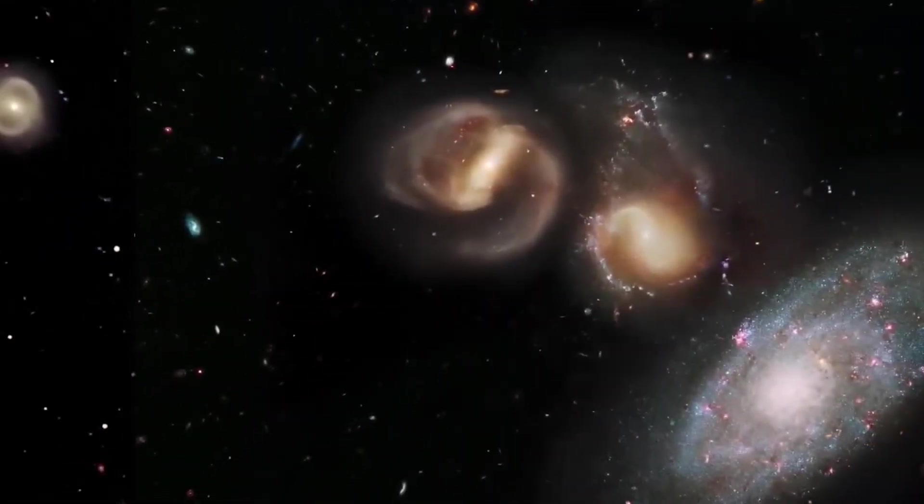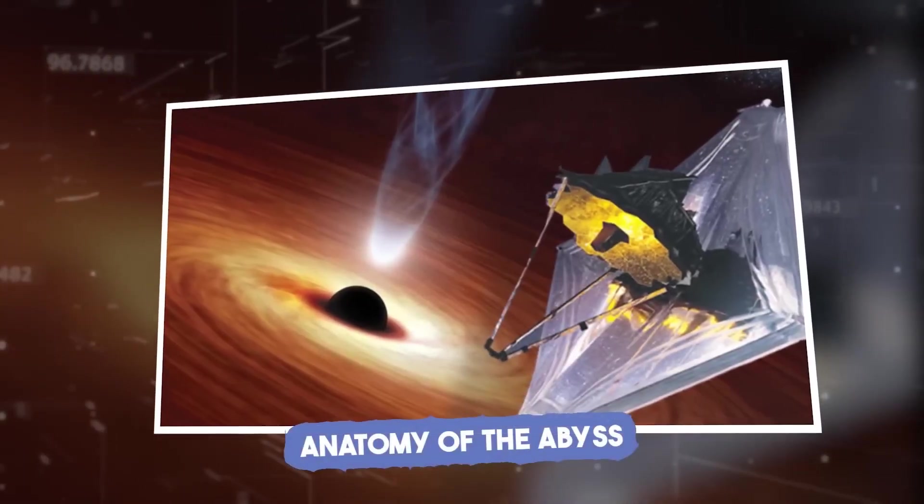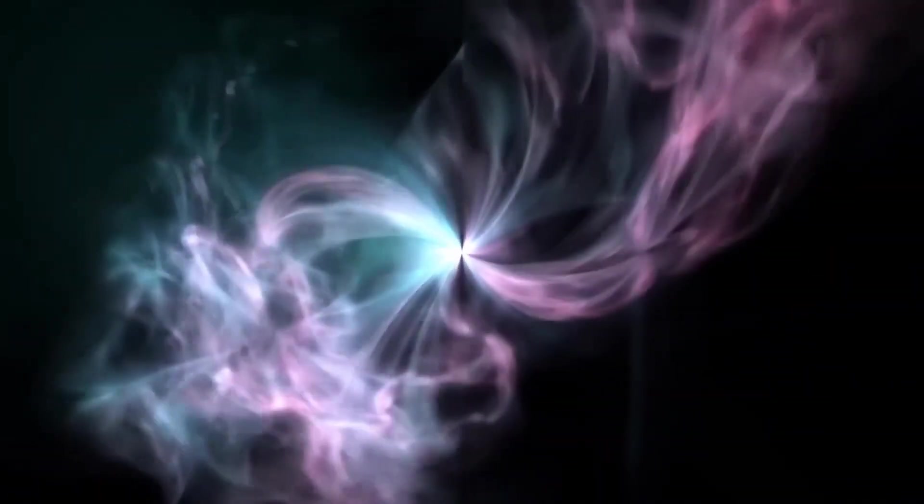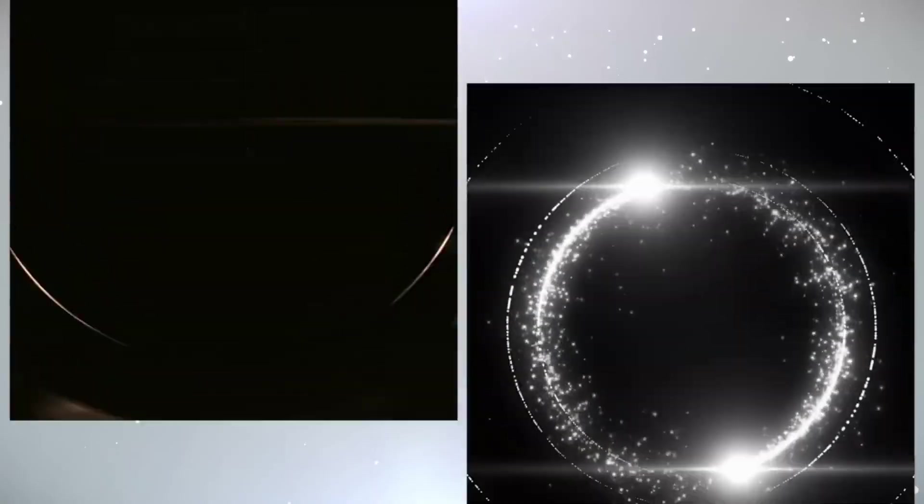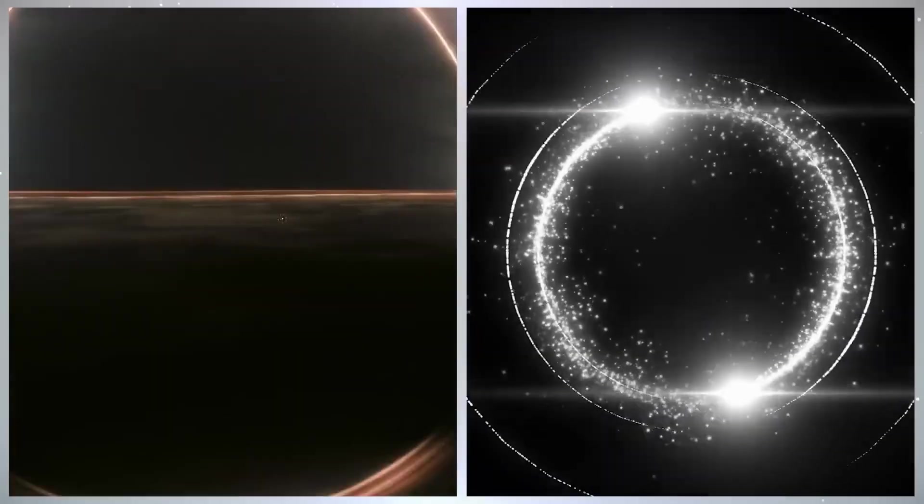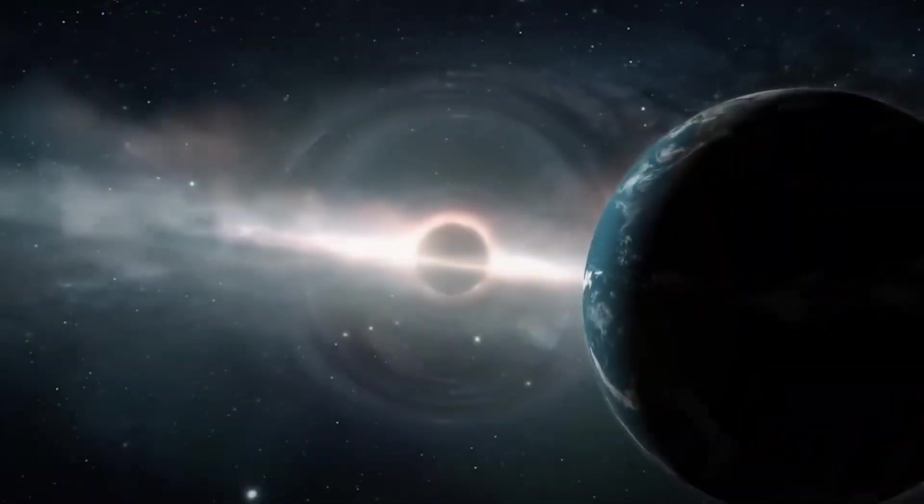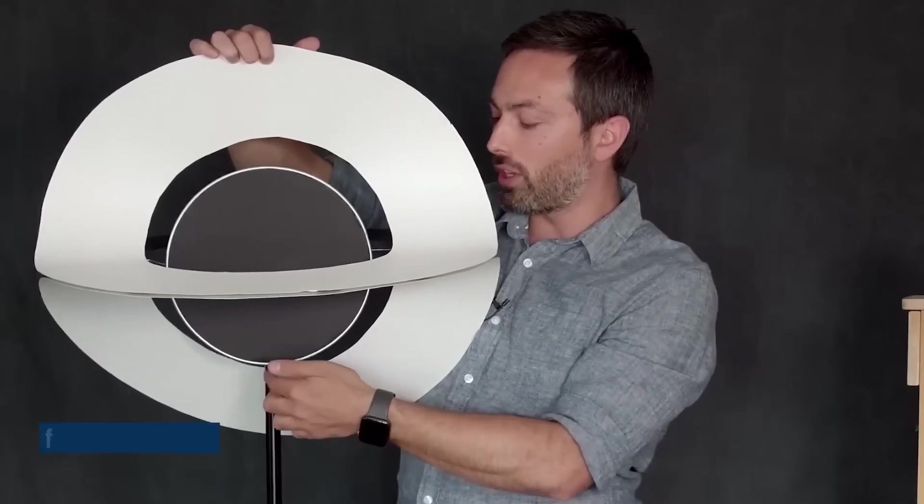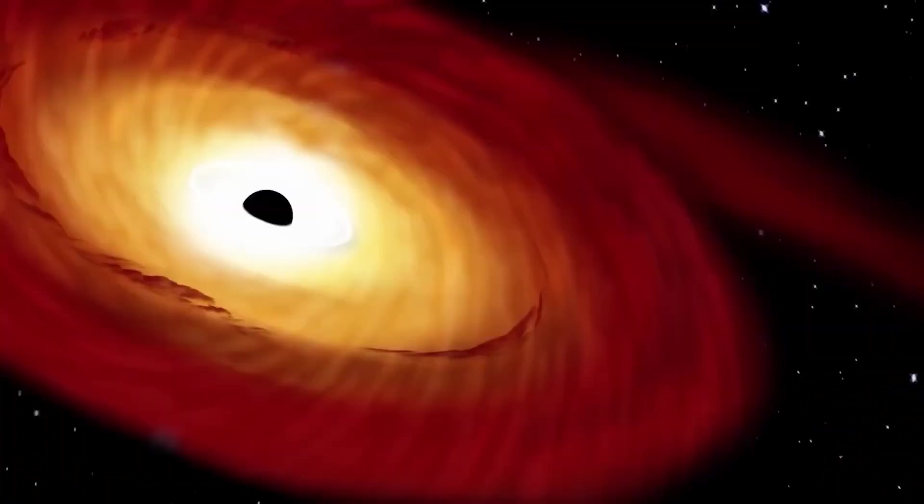Black holes are not active hunters that seek out prey, but if something unfortunate wanders too close, they will not hesitate to devour it entirely. One of the most violent events a black hole can initiate is shredding a star apart. This cataclysmic event is called a tidal disruption event. As a star ventures near a black hole, the intense gravity pulls significantly harder on the side closer to the hole than on the far side, stretching the star into a long thin noodle of hot gas, a process graphically known as spaghettification.